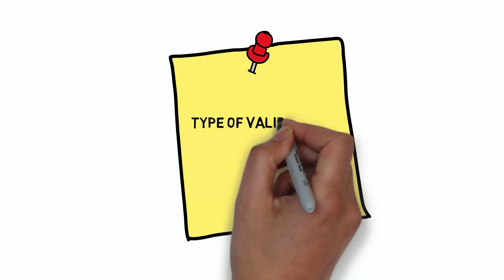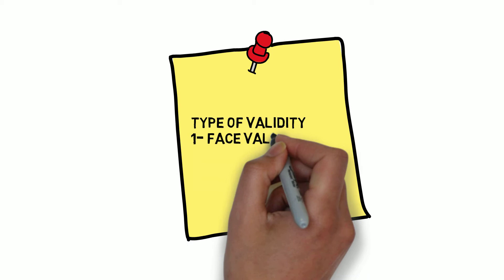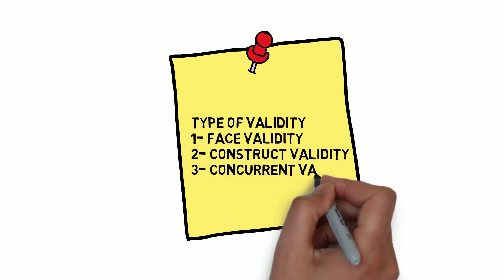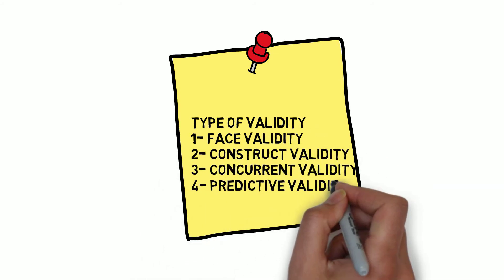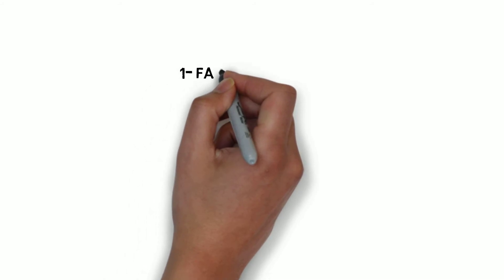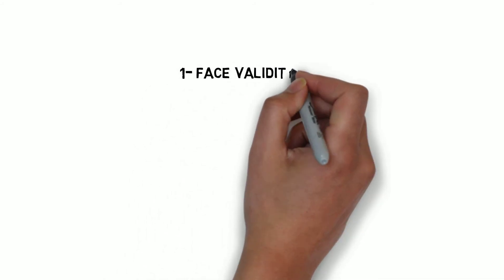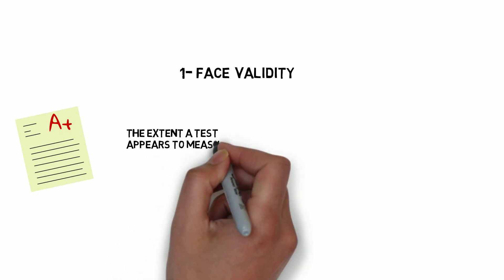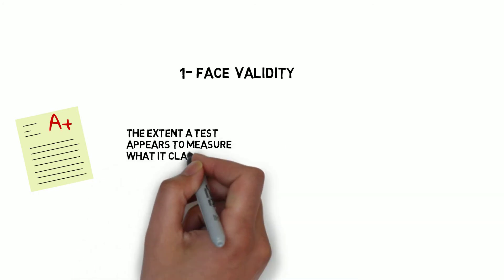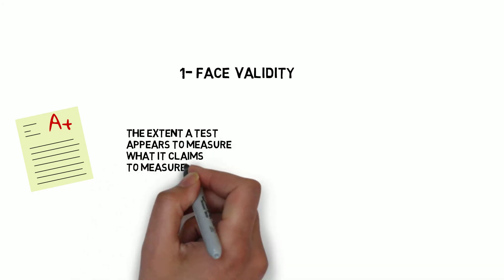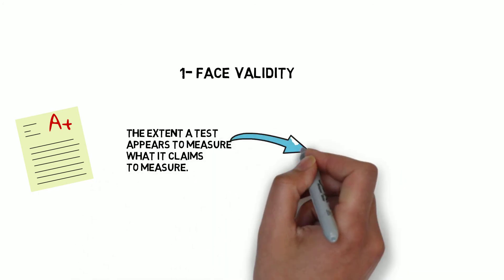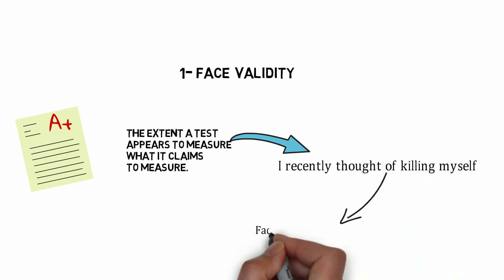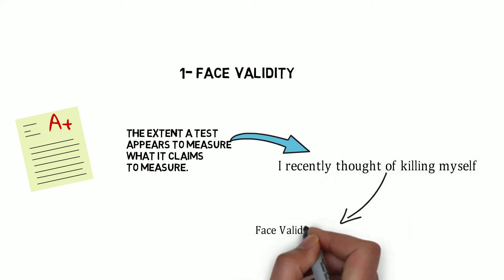There are four types of validity commonly used in the context of an instrument. The first one is face validity. Face validity refers to the extent a test appears to measure what it claims to measure.